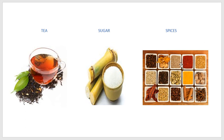Spices. Spices are what mummy uses every day in the kitchen to prepare yummy food. Chillies, red chillies, cardamom, cloves, pepper — all these are spices. These are some examples of spices, and we get spices from plants. Plants are very useful — almost everything we are eating, we get from plants.